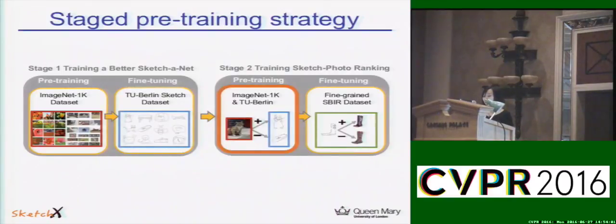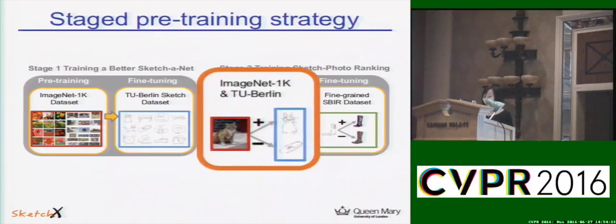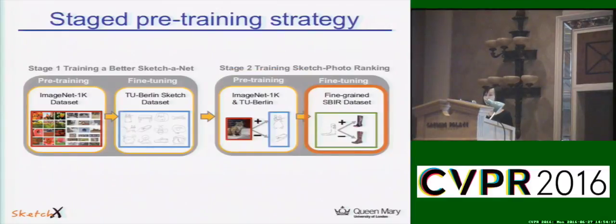Next is training our triplet ranking model. As introduced before, our new dataset has over 30,000 triplet ranking annotations. However, this is still not enough to train a triplet ranking model from scratch. So we first train it on category-level sketch-photo pairs collected from 187 categories that exist in both ImageNet 1000 and TU Berlin sketch dataset. Finally, we fine-tune the triplet ranking model on our fine-grained SBIR dataset.